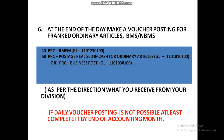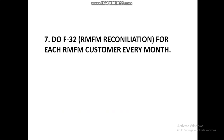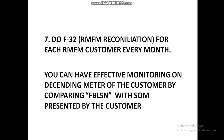Then do RMFM reconciliation using F-32 for each RMFM customer every month. You can have effective monitoring on the descending meter of the customer by comparing FBL 5N with the statement of mailing presented by the customer. RMFM reconciliation is very important for DPA — only then will the DOP balance sheet appear correctly. Thank you.